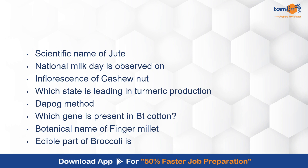For example, there was a question on the scientific name of Jute — you know it very well. There was also a question on National Milk Day observed on 26th November — a very obvious, general question. Inflorescence of cashew nut is a kind of moderate question; it is specifically studied in various books. Which state is leading in turmeric production? Maharashtra is leading.